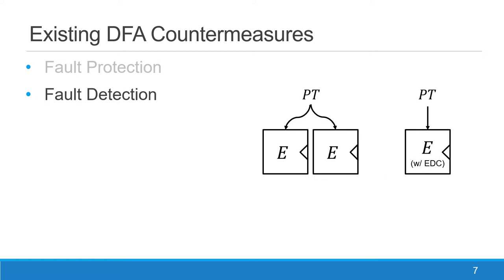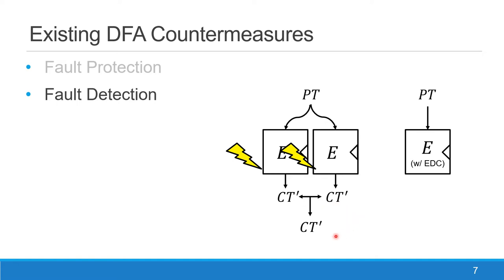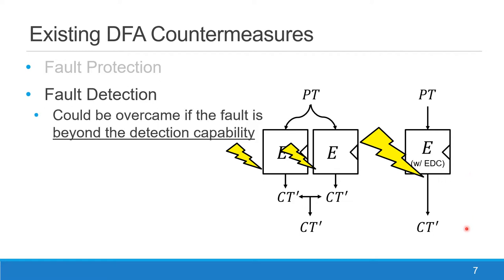However, such methods could also be defeated by more advanced adversaries. For the duplicate computation, if the attacker can inject a duplicate fault at the exact same position resulting in the exact same faulty output, the check will still recognize it as the same result and continue to output the faulty result. For the error detection code, if the fault is large enough and beyond the detectable bound of the error detection code, you will not be able to pick up the error and will also output the faulty output. In both cases, the countermeasure can be overcome if the fault is beyond its detection capability.